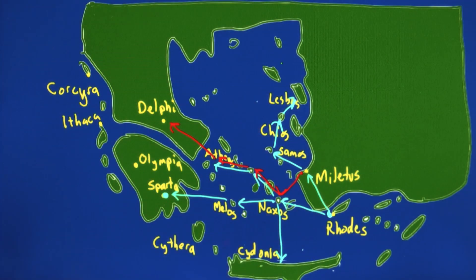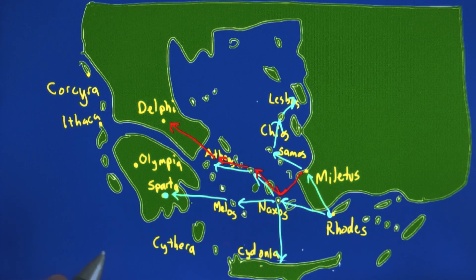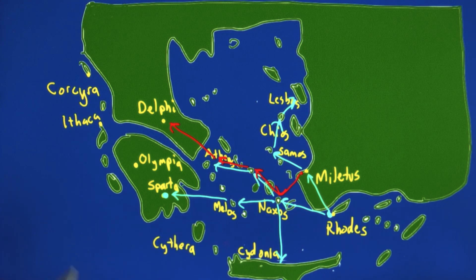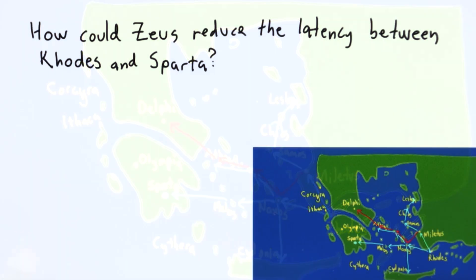Now that you understand latency, I want to go back to the Greek signaling network. Suppose Zeus, who is all powerful, wanted to send a message from Rhodes to Sparta, and he thought that the latency of the smoke signal network as it was currently set up was too high — that it takes too long for the message starting from Rhodes to reach Sparta.